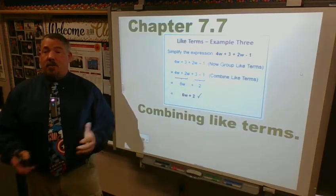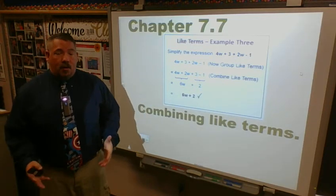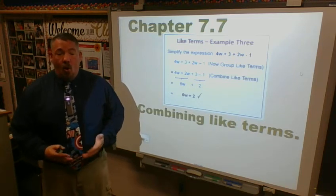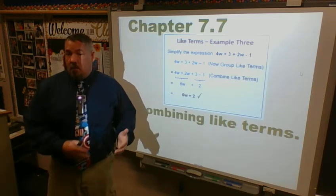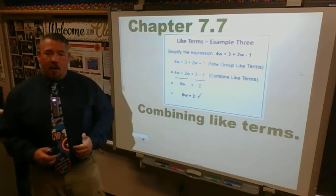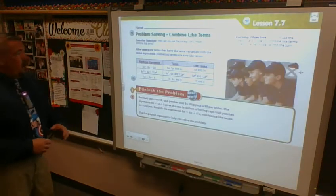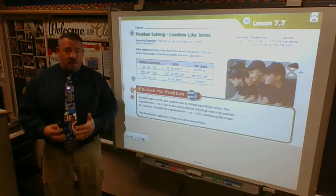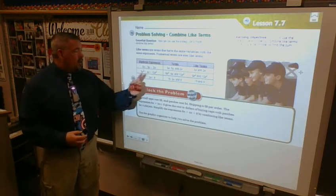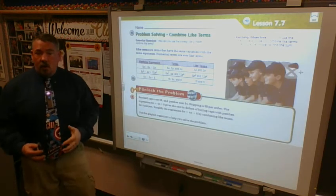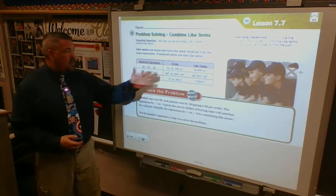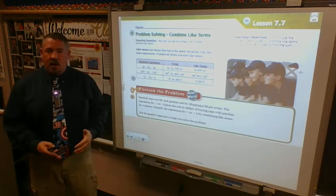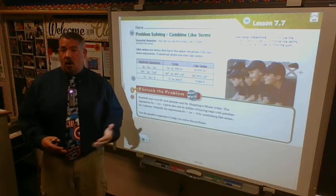Like terms means there are constants — numbers without a variable — or the variable itself is the same variable. Looking at the chart they give us, there are three different algebraic expressions. We look at each of the terms in those expressions, then figure out which ones are alike.